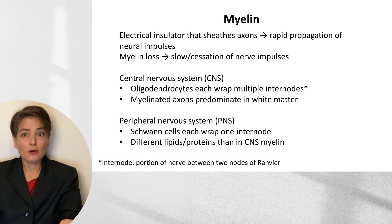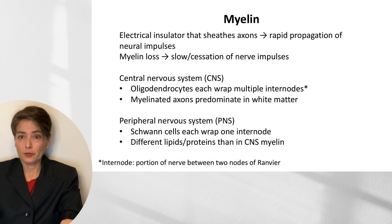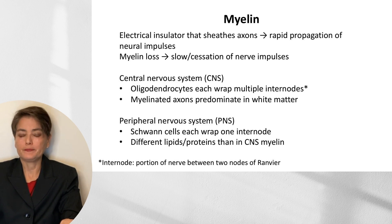Myelin is an electrical insulator that sheathes axons, enabling rapid propagation of neural impulses. It would stand to reason, therefore, that with myelin loss, we would get slowing and even cessation of our nerve impulses, which can have a tremendous impact on the patient.